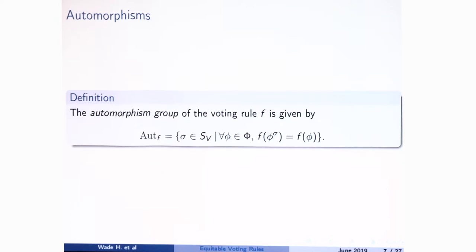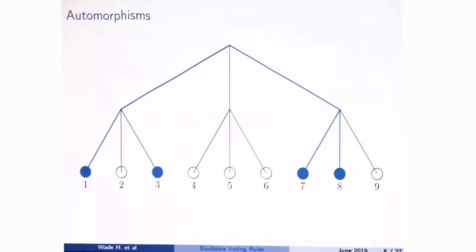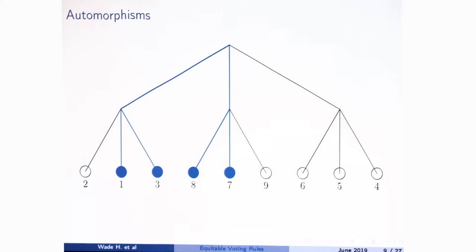We're going to look at automorphisms of voting rules. Here's a picture — we kept voters one, two, and three together; four, five, and six together; and seven, eight, and nine together, just written in a different order. The votes they're casting are the same as before, and the outcome is the same — we're taking majority, and then again majority. In general, an automorphism is a symmetry of a voting rule: it's a way of permuting the voters that doesn't change the outcome as long as everyone votes the same way.